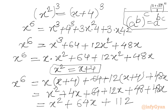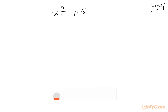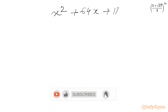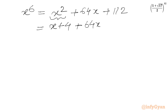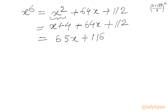Again we can write x square as x plus 4. So x power 6 equals x square plus 64x plus 112. Substituting x square equals x plus 4: x power 6 equals x plus 4 plus 64x plus 112, which becomes 65x plus 116. This is the value of x power 6.